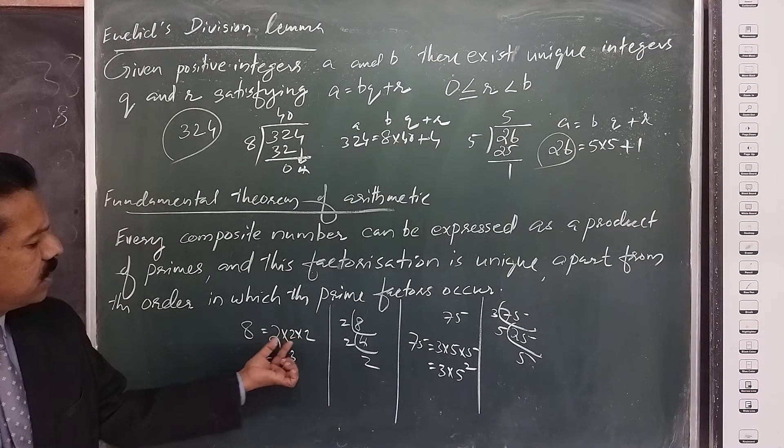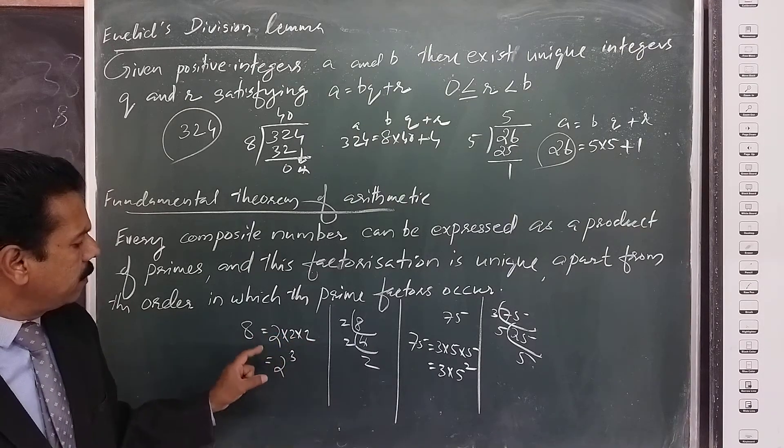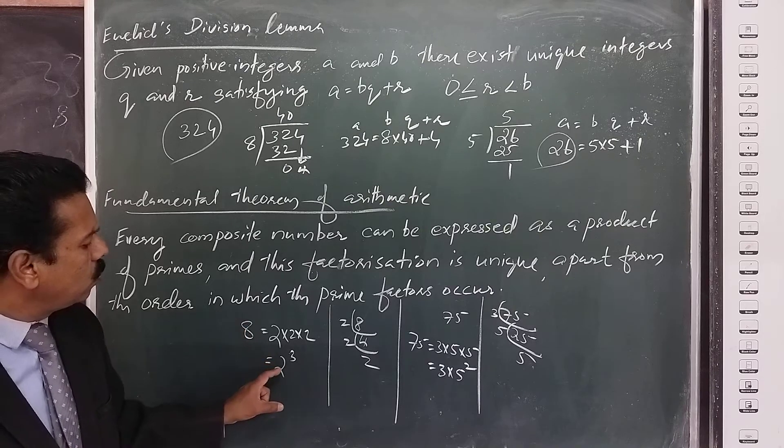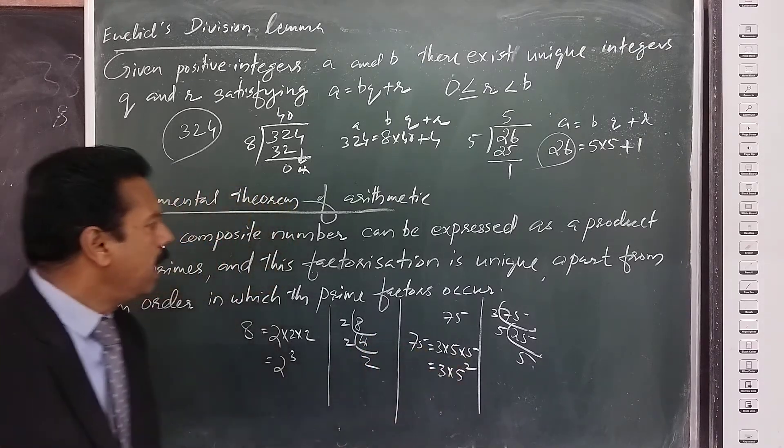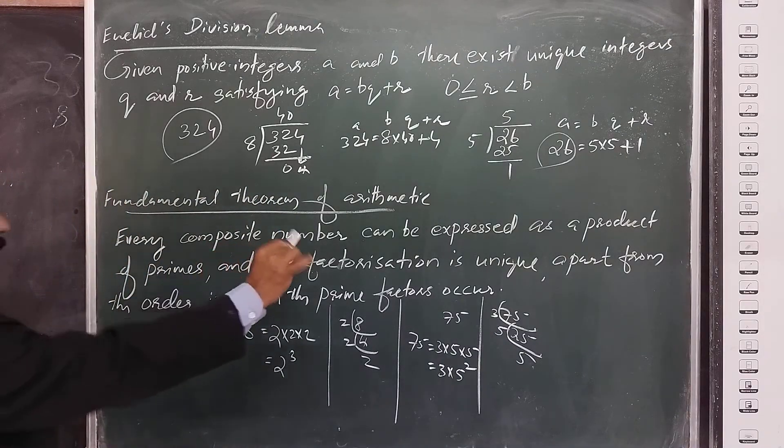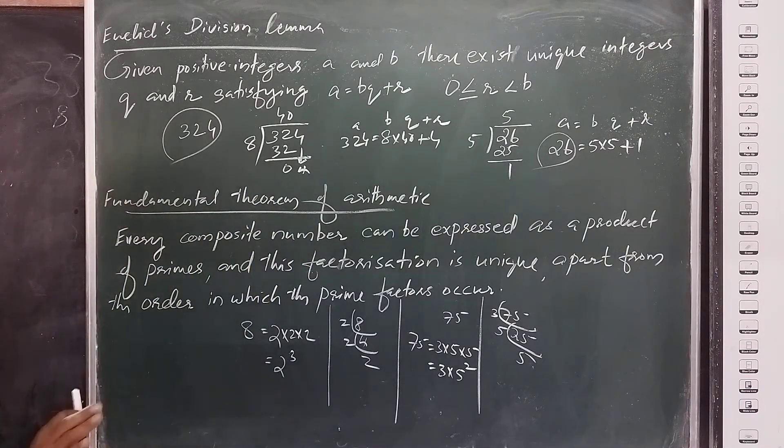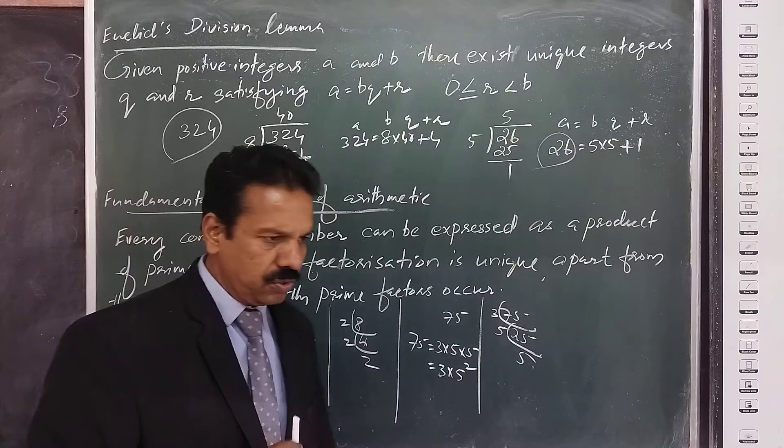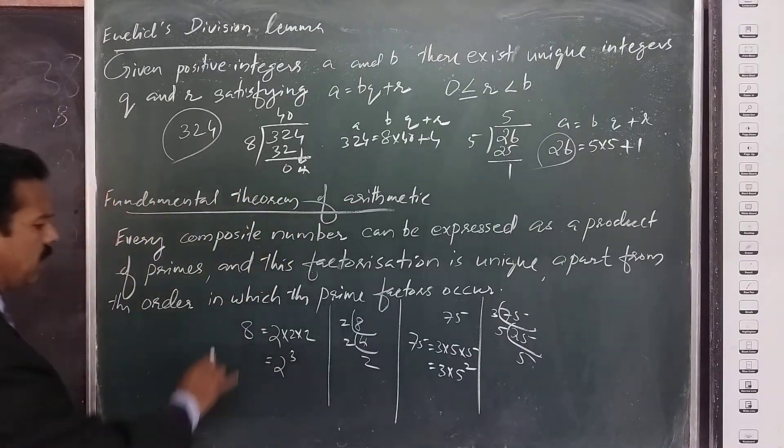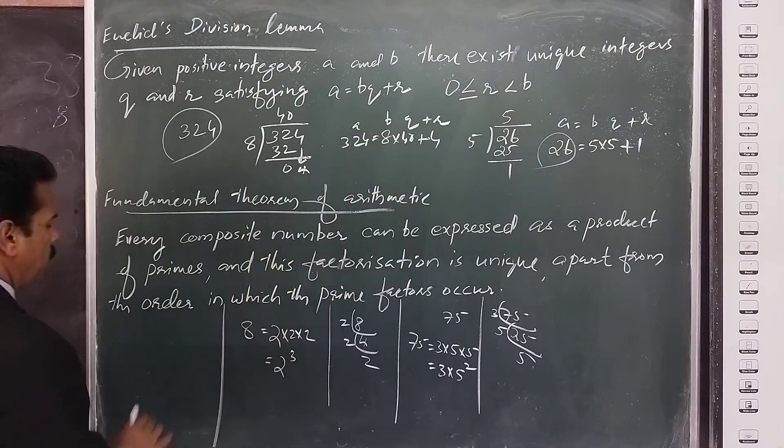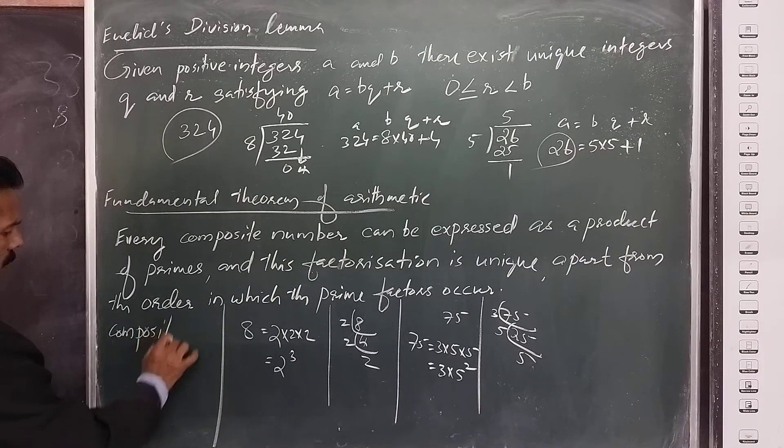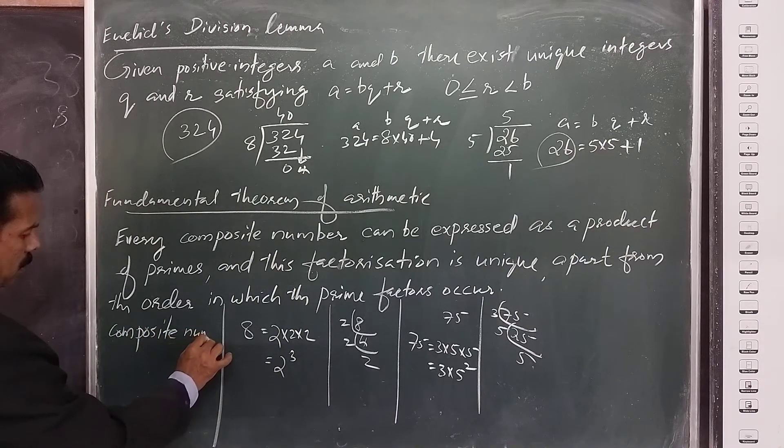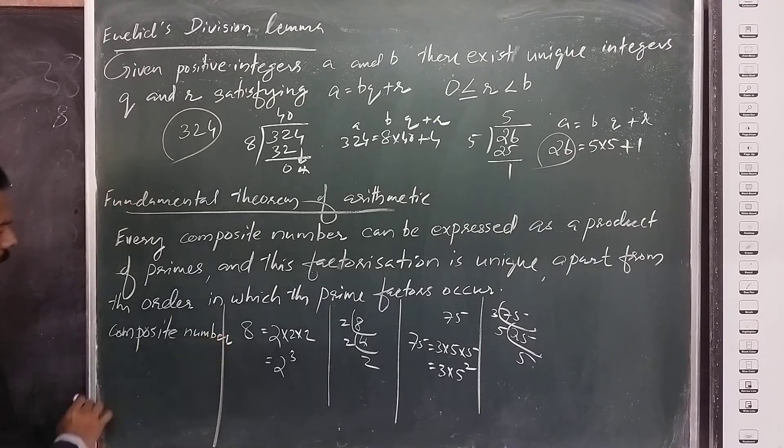How many 2's are there in the factorization? Three 2's. We can write the prime factors: 8 equals 2 cube, 75 equals 3 into 5 squared. Every composite number—composite number means numbers having more than 2 factors. And a prime number is a number having only two factors.